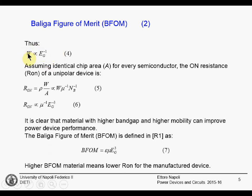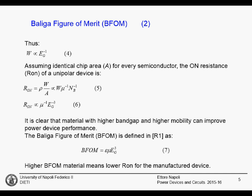Given a fixed area for a given power device, we can calculate the on-state resistance for a unipolar device like a MOSFET or a Schottky diode. It is given by the resistivity multiplied by the thickness divided by the area, which is proportional to W, the inverse of the mobility, and the inverse of the doping. Finally, the on-state resistance is inversely proportional to the mobility and inversely proportional to the cube power of the bandgap. If we can use materials with higher mobility and higher bandgap, the on-state resistance for a given breakdown voltage can be decreased.